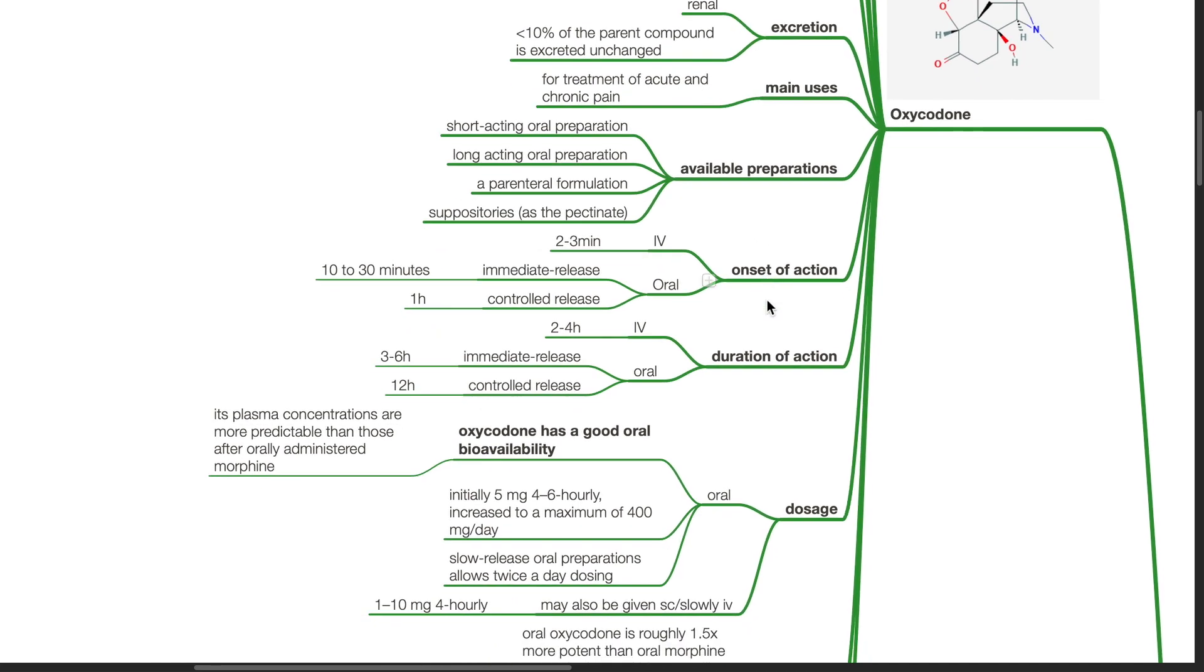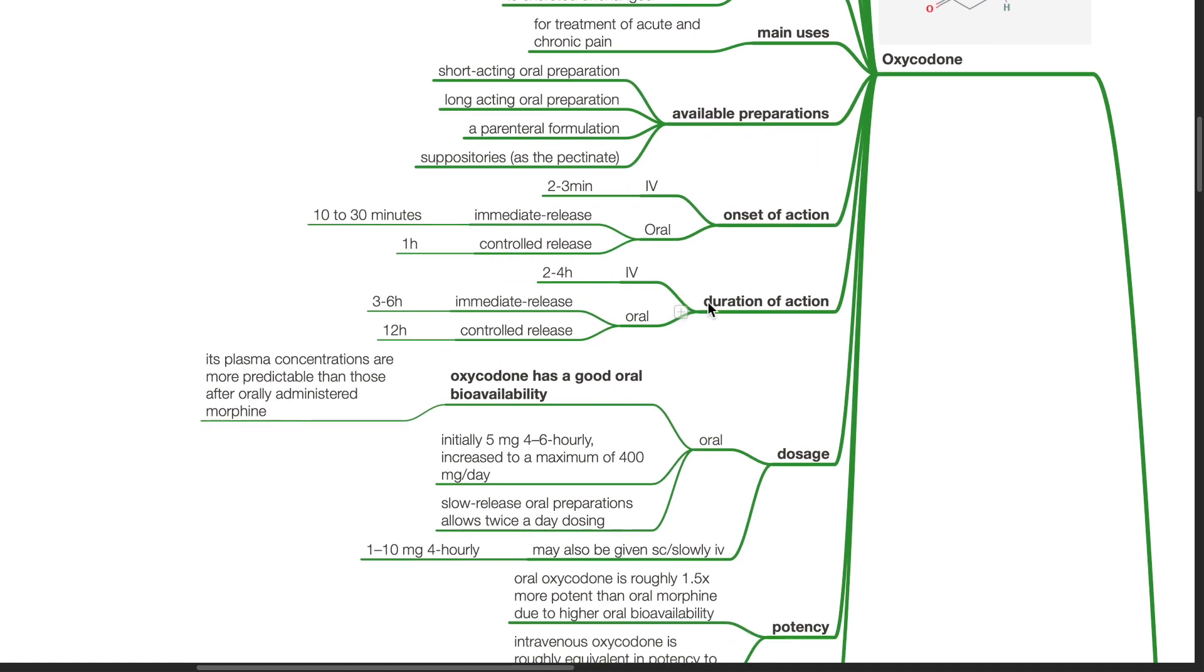Onset of action for IV route 2 to 3 minutes, immediate release oral route 10 to 30 minutes, controlled release oral route 1 hour. Duration of action of IV route is 2 to 4 hours, immediate release oral route is 3 to 6 hours, controlled release oral route 12 hours.